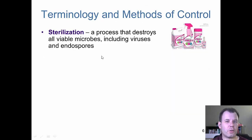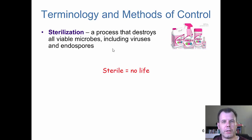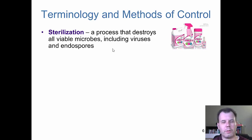Let's talk about terms in controlling microorganisms — I think these are really important. What does sterilization mean versus disinfection versus antiseptic or asepsis? The first term is sterilization. Sterilization is the process in which you destroy all viable microbes. Sterile means no life. When you eliminate all life, you have eliminated everything including the endospores. So when we say sterilization, we mean we're eliminating everything — the vegetative bacteria, the moderate and the highest resistance, the endospores and even the prions.